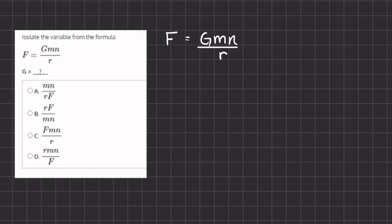In this problem we are given a formula and we want to isolate one of the variables, g. I rewrote the problem here on the right hand side so it would be easier to solve. This problem is exactly like how you would solve it with regular numbers — we are just using variables instead.